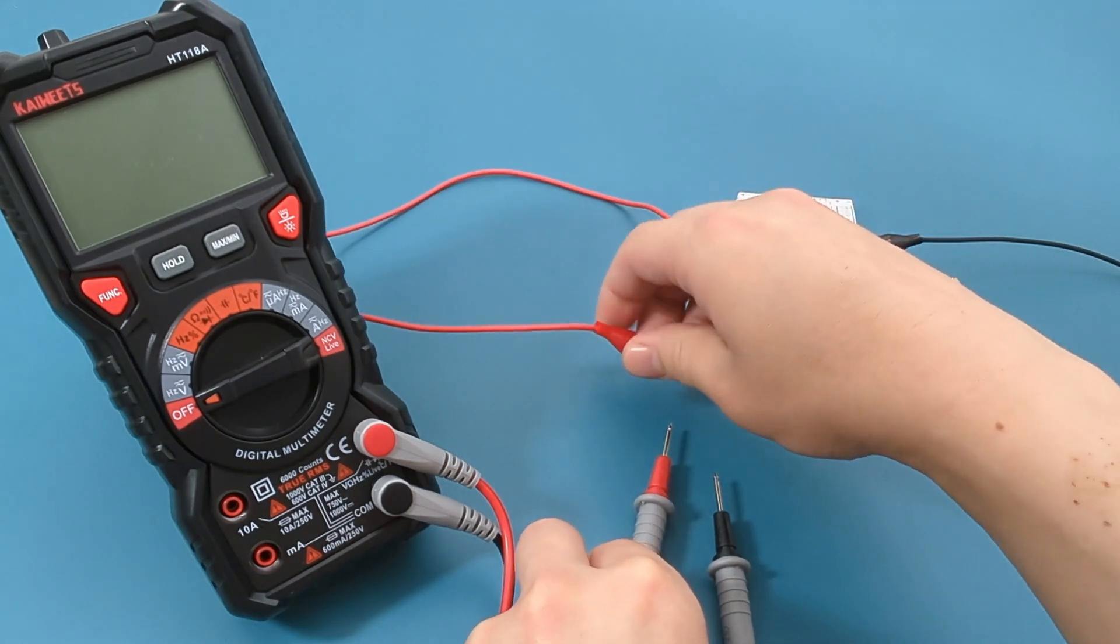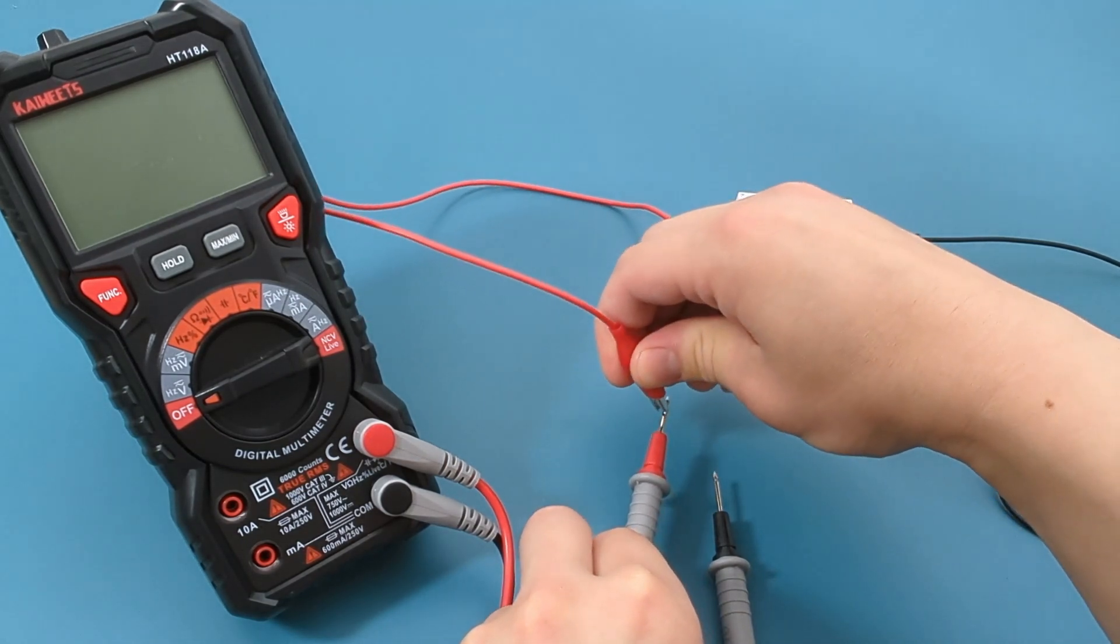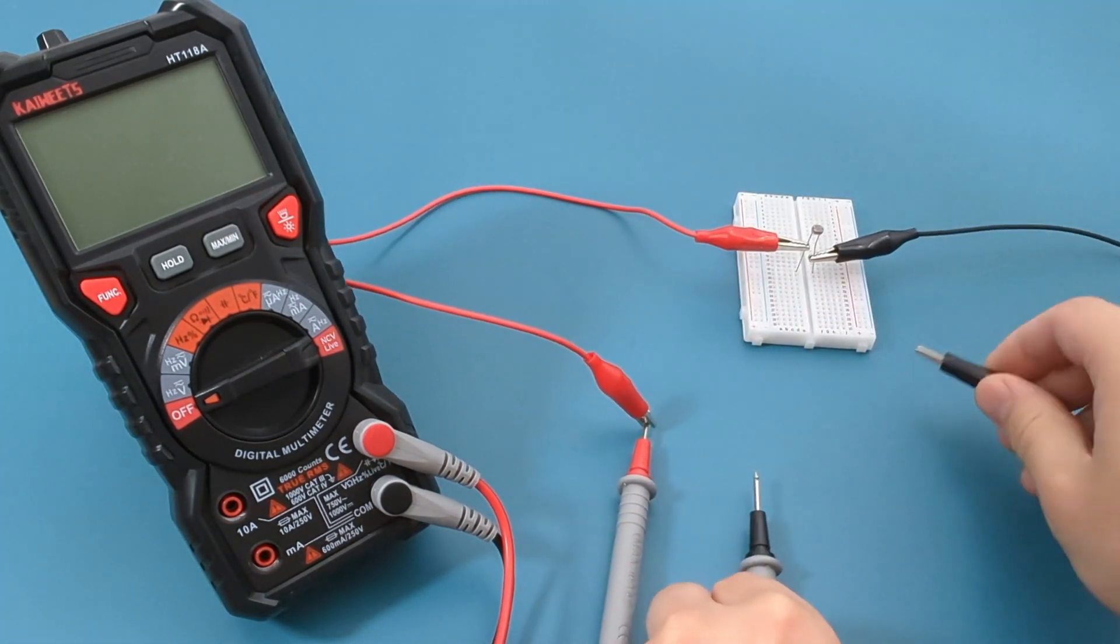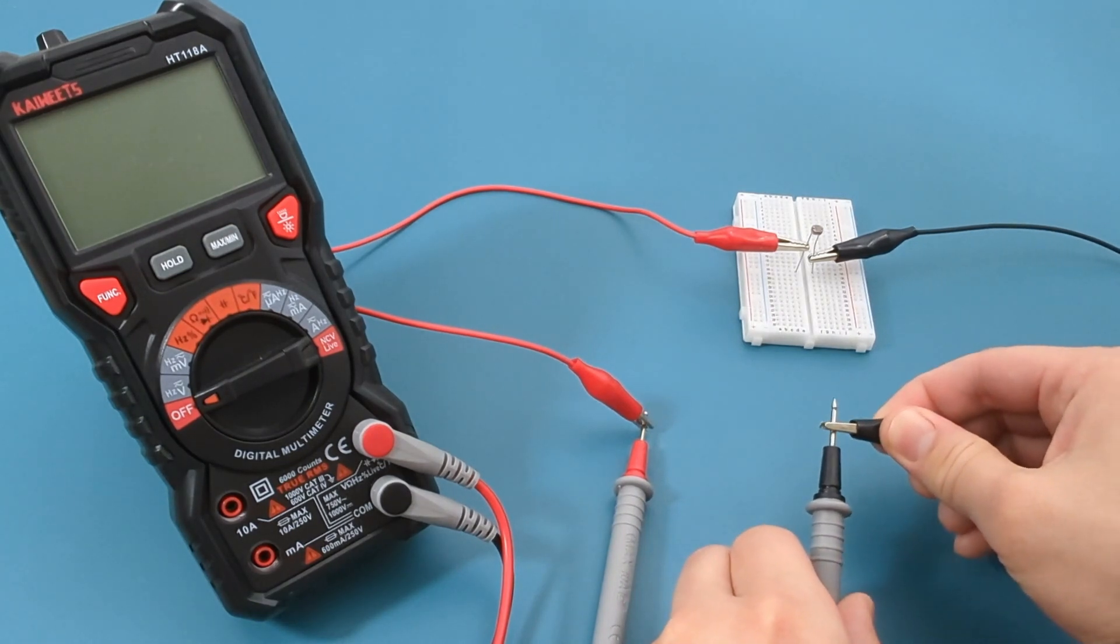For our use case, let's connect the red probe lead to the red alligator clip. Connect the black probe lead to the black alligator clip.